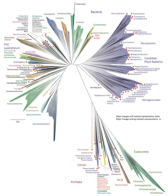Of the many twigs which flourished when the tree was a mere bush, only two or three, now grown into great branches, yet survive and bear all the other branches, so with the species which lived during long past geological periods, very few now have living and modified descendants. From the first growth of the tree, many a limb and branch has decayed and dropped off, and these lost branches of various sizes may represent those whole orders, families, and genera which have now no living representatives, and which are known to us only from having been found in a fossil state.